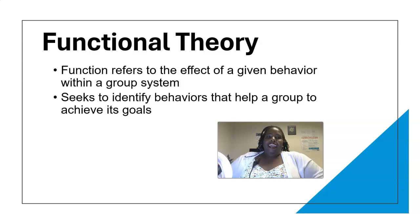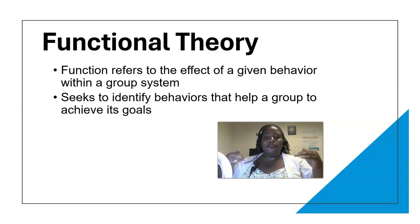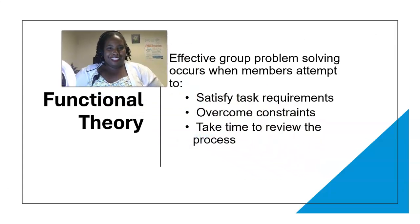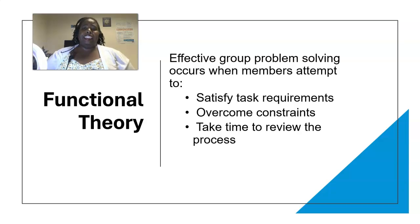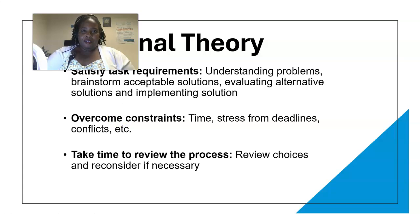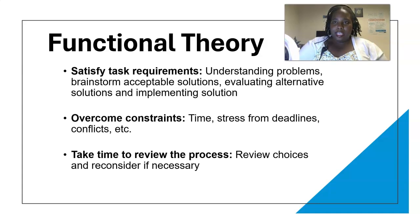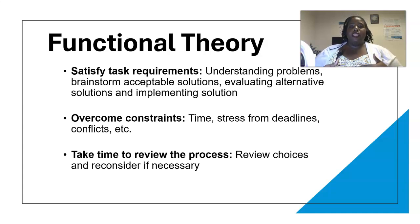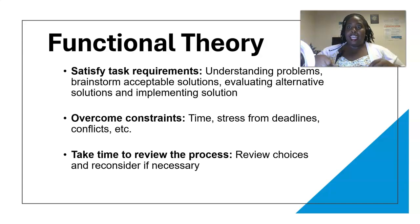Then we have functional theory, which talks about the effect of a given behavior in a group or system. We are identifying certain behaviors that increase your likelihood of success in a group and achieving your goals. Effective group problem solving occurs when members attempt to satisfy task requirements, overcome time constraints, and take time to review the process. Satisfying task requirements means understanding problems, brainstorming solutions, evaluating alternative solutions, and implementing the solution.